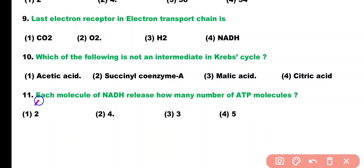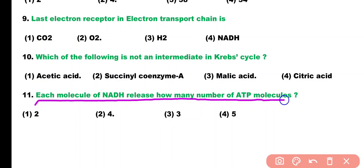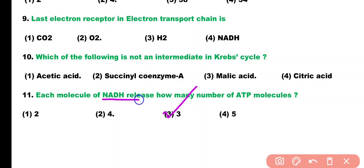Question number 11. Each molecule of NADH releases how many ATP molecules? Options: 2, 4, 3, or 5. Correct answer is option 3. 1 NADH molecule releases 3 ATP. Similarly, 1 FADH molecule releases 2 ATP.